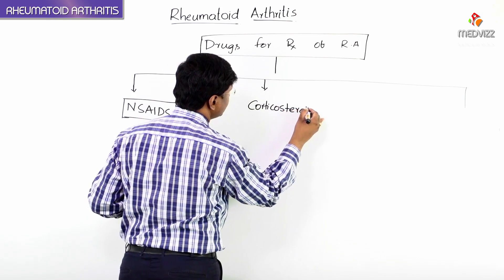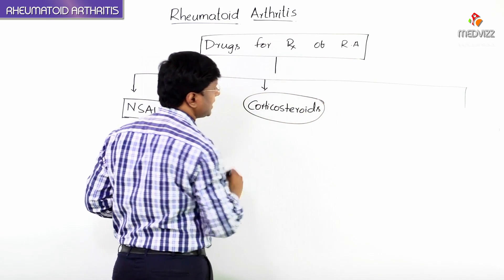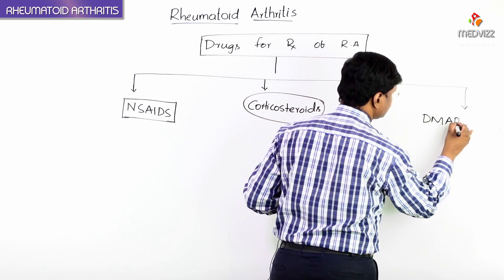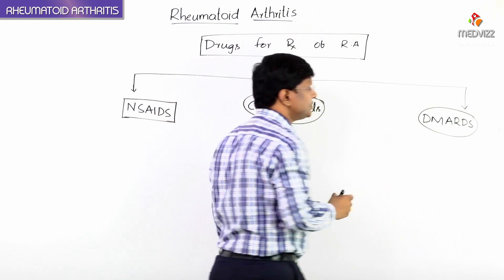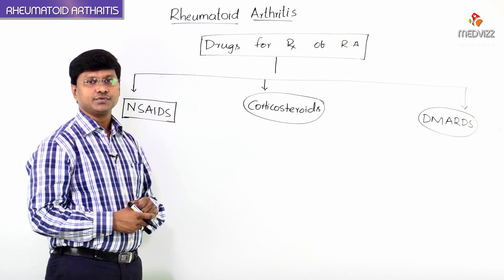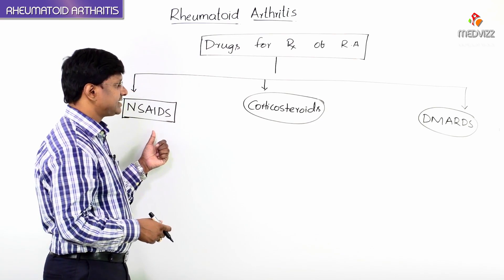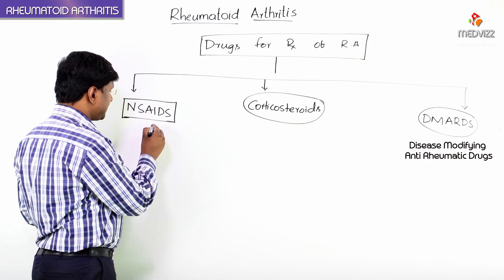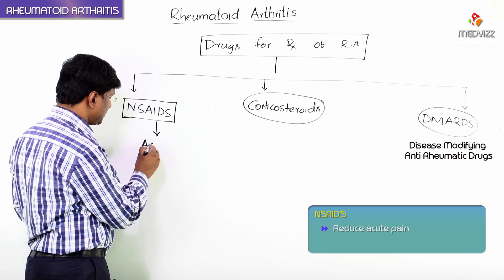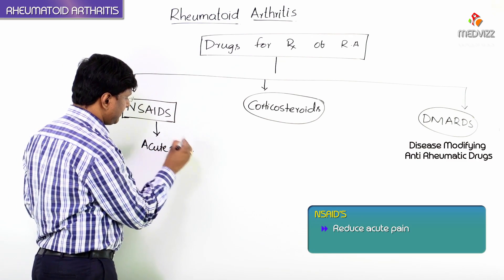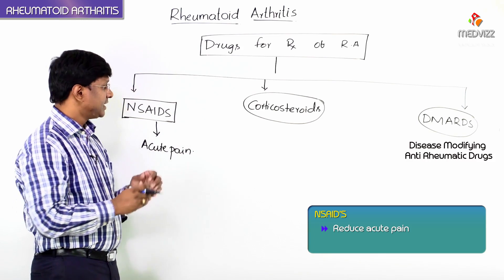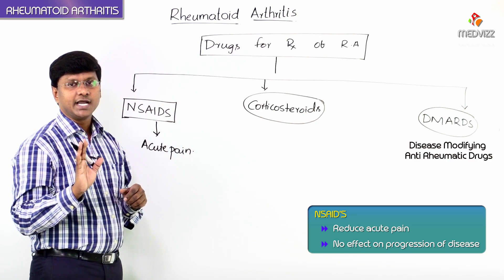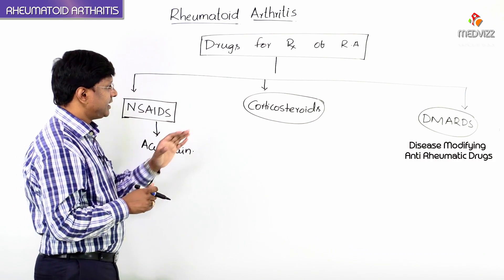The last group of drugs is the DMARDs. So these are the three groups used in the treatment of rheumatoid arthritis: NSAIDs, corticosteroids, and disease modifying anti-rheumatic drugs. NSAIDs are mainly useful for reducing acute pain. They don't have any effect on the progression of the disease — they just reduce the acute pain in patients with arthritis.